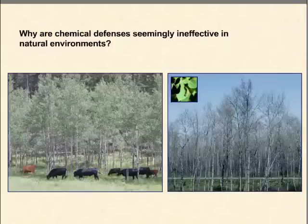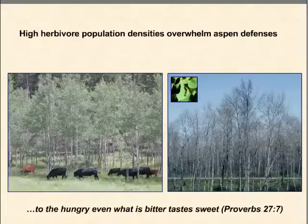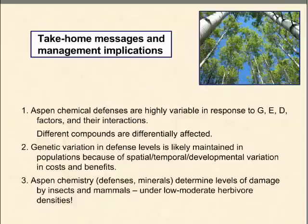The question then comes up: why are these chemical defenses seemingly ineffective in some natural environments, as we know is true throughout much of the Intermountain West under heavy ungulate grazing and during outbreaks of tent caterpillars and gypsy moths in the Great Lakes region? I believe the answer is that high herbivore population densities simply overwhelm Aspen defenses. As the proverb says, 'to the hungry, even what is bitter tastes sweet.'